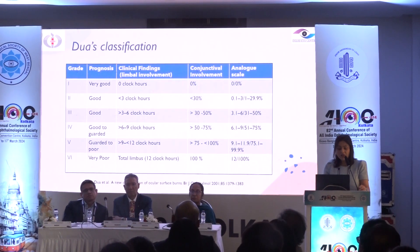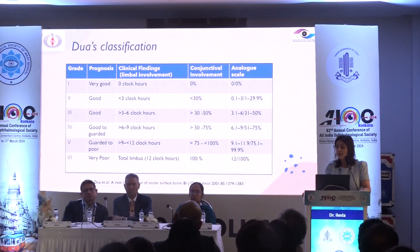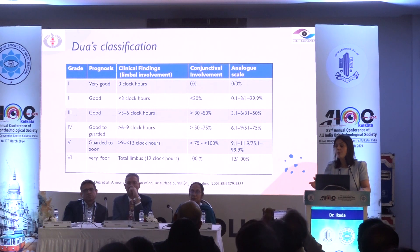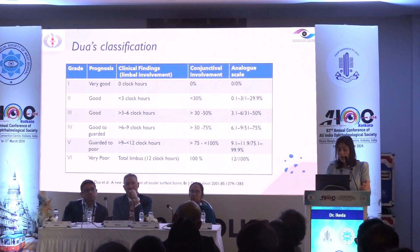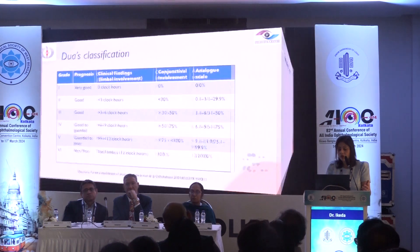The most common classification we use is the Dua's classification, which is based on the extent of limbal involvement as well as bulbar conjunctival involvement. A few limitations of Dua's classification: it does not address scleral ischemia or intraocular pressure, but it helps in clinically assessing the severity of the chemical burn.